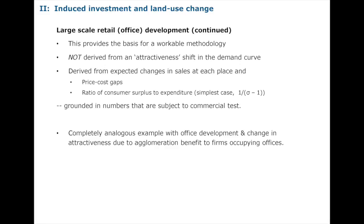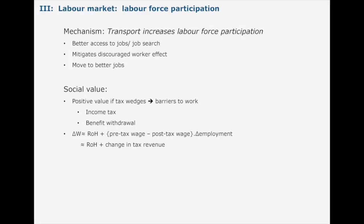So there is a workable methodology for what I think is an important wider benefit — derived from those two effects A and B — importantly grounded in numbers that are observable and in the commercial case being put forward for the development. That bounds things; it means we're not floating off into ridiculously inflated numbers. Look at what's happening or is projected to happen on the ground and work up from there. What I've just said is completely analogous with 'office' substituted for 'shop' — it would come out isomorphic to the productivity case I made earlier, where being together in offices reflects spillovers.